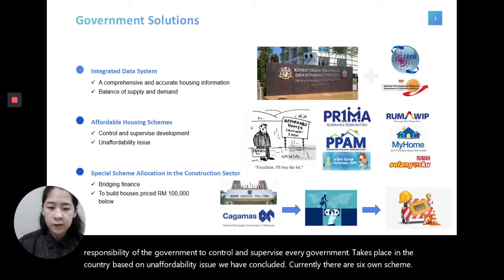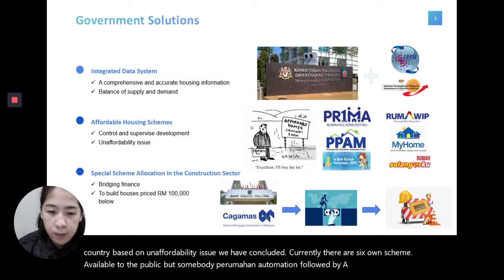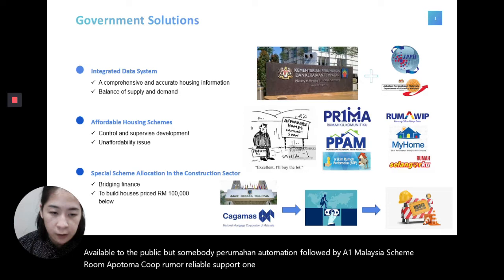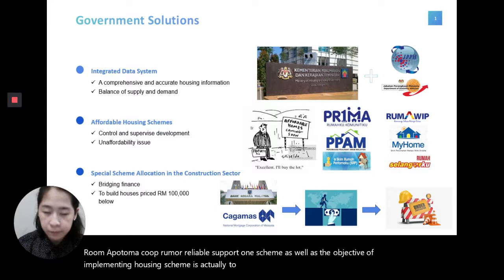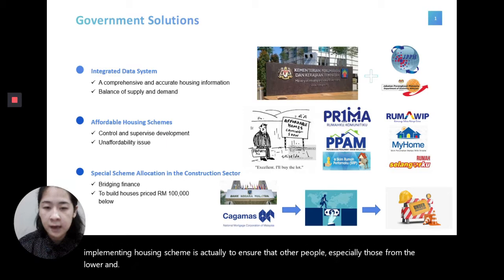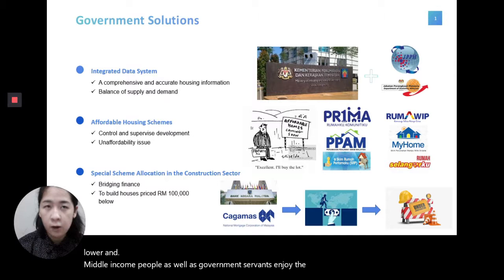The six housing schemes are: Perumahan Satu Malaysia, Perumahan Penjawat Awam Malaysia, Skim Rumah Pertamaku, Rumah Wilayah Persekutuan, Skim Perumahan Mampu Milik Swasta, and Rumah Selamaku. The objective of implementing these housing schemes is to ensure that all people, especially those from lower and middle income groups as well as government servants, enjoy the privilege of owning or buying an affordable house.